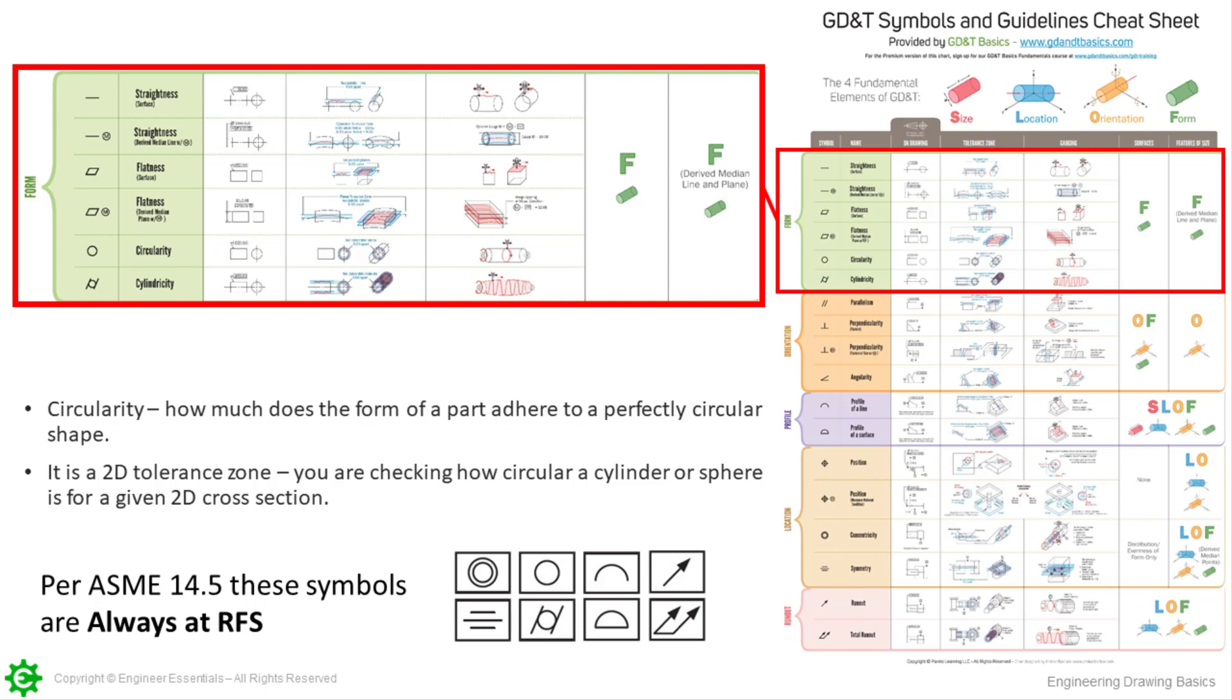Right below here circularity - what it is is how much does the form of a part adhere to a perfectly circular shape. Remember it's two-dimensional so on this one you're checking how circular a cylinder or sphere is for a given 2D cross-section.